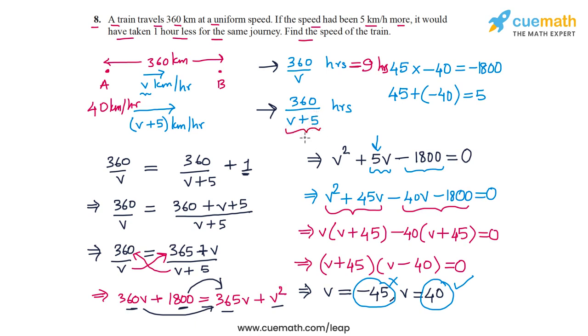Then the time taken would be 360 by 45, which is 8 hours. And we find that 8 is 1 less than 9, so this answer 40 aligns with what is told to us in the problem statement. So the answer is that the speed of the train is 40 kilometers per hour.